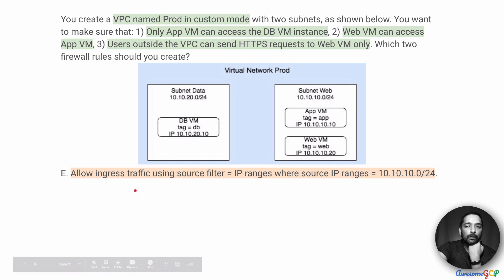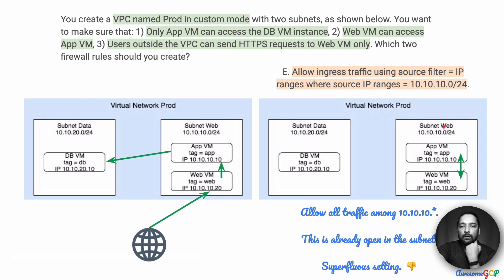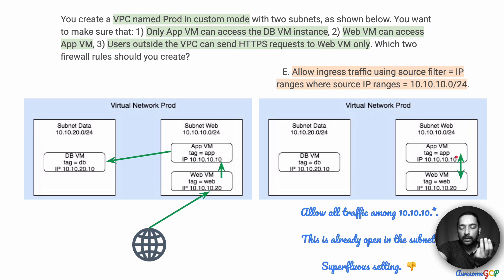Option E suggests allowing ingress traffic using source filter equal to IP ranges, where source IP ranges is 10.10.10.0/24. This CIDR range essentially means allow all traffic within that subnet. However, this is a superfluous setting because this traffic is already allowed — there is no need to set it again. So even though this setting allows traffic to flow between the two VMs, it was already there and we don't need to redo it. Therefore, we eliminate option E.